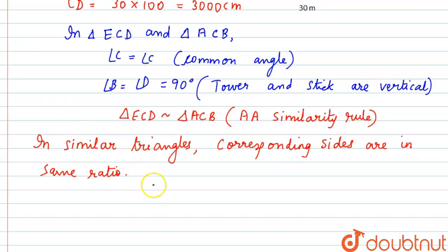Therefore, we can write the ratio as EC by AC is equal to CD by BC is equal to ED by AB.